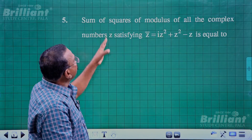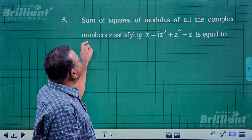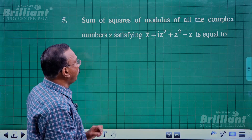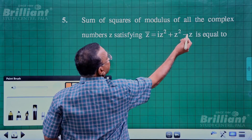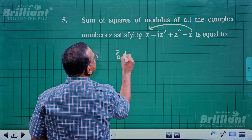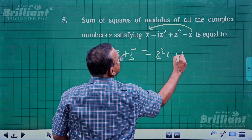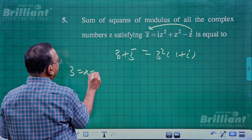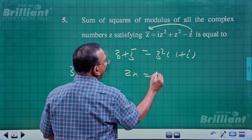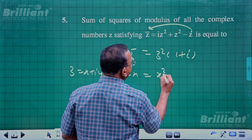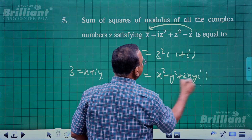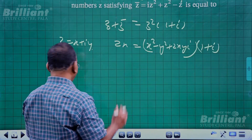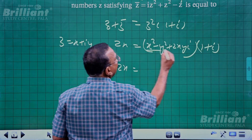Question 5: Find the sum of squares of moduli of all complex numbers z satisfying z̄ = iz² + z² - z. Rearranging, z + z̄ = z²(1 + i). Writing z = x + iy gives 2x = (x² - y² + 2xyi)(1 + i). Expanding and equating real parts: 2x = x² - y² - 2xy.